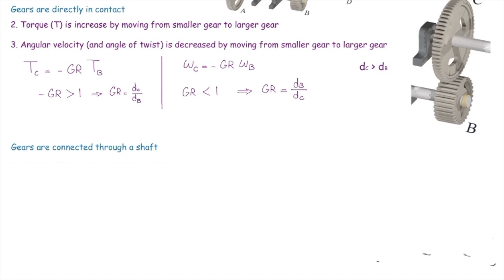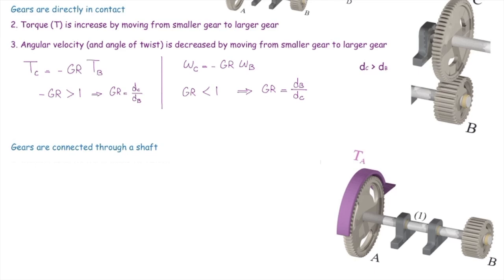We do have other two rules, four and five, which are used when there are two gears connected by shaft. In that case, whatever the angular velocity is at this end, we expect to have the same angular velocity at the other end.